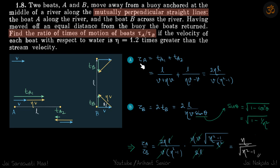So now let's find the time for the first part, that will be TA1 plus TA2. So TA1 is L upon total velocity, which is V plus eta v, and while returning it is L upon eta v minus v, which gives this.